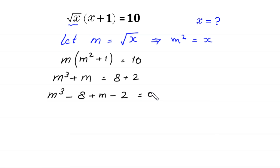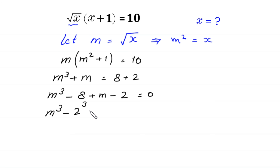Next, m cubed minus — we can write this 8 as 2 cubed — plus m minus 2, is equal to 0.